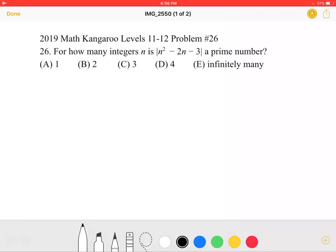This is the 2019 Math Kangaroo Levels 11-12, problem number 26. For how many integers n is |n² - 2n - 3| a prime number? (A) 1, (B) 2, (C) 3, (D) 4, or (E) infinitely many.